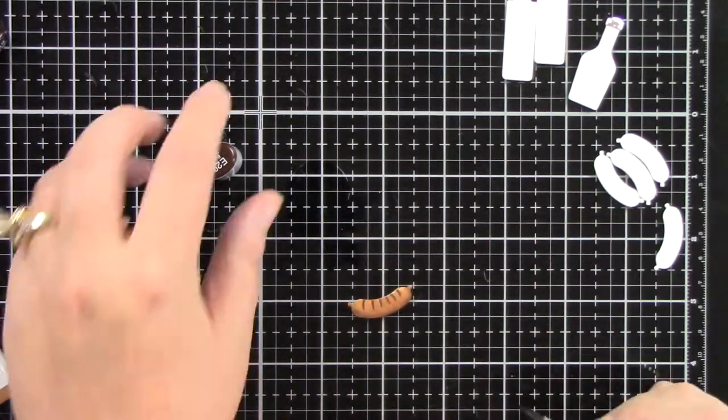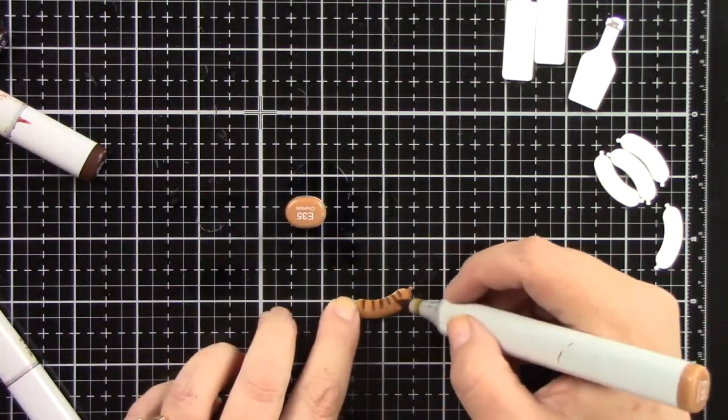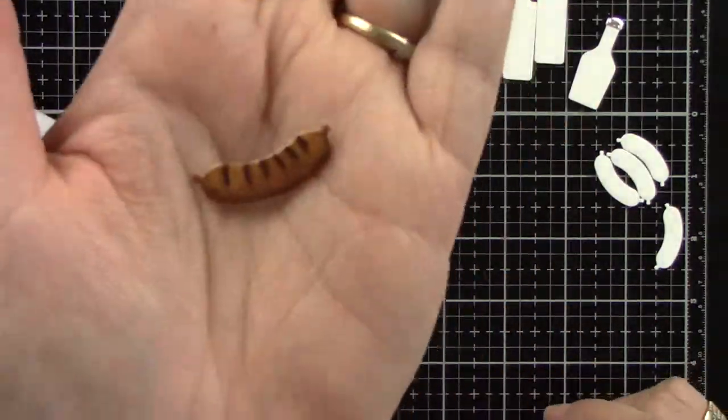I'm going to come back with a lighter color, go over the same grill marks, another lighter color and go over, then the lightest color and just do a slight blending. And that to me looks perfect.